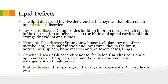Then we have Niemann-Pick disease. It's a deficiency in sphingomyelinase, which is a cellular enzyme of fat metabolism. The cells malfunction and over time die, and this happens in the brain, nerves, liver, spleen, bone marrow, and in severe cases, the lungs.